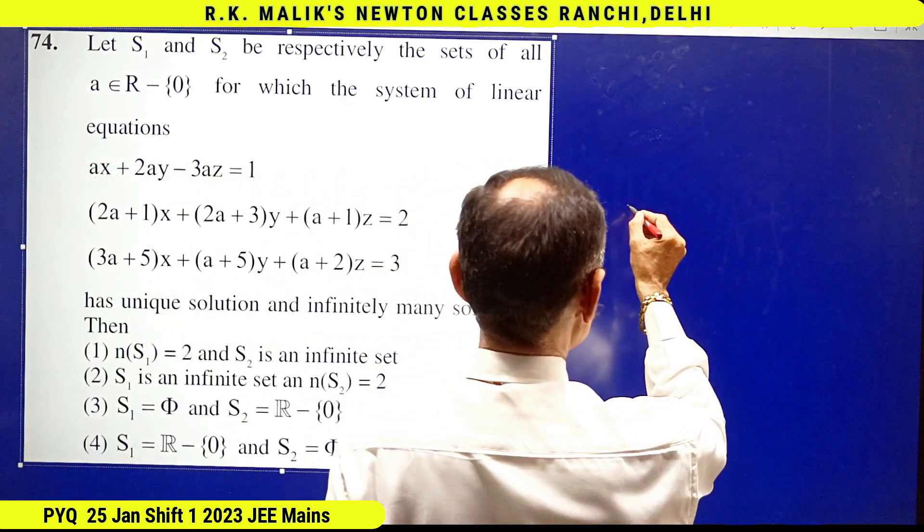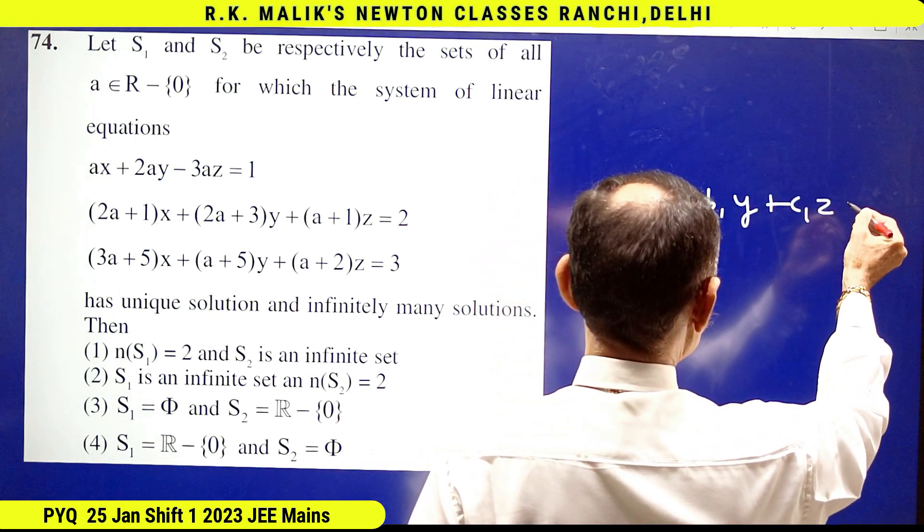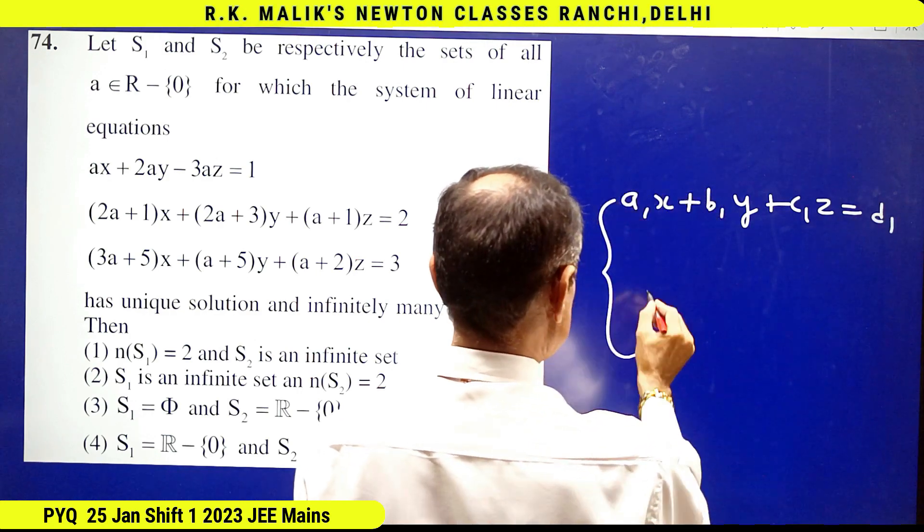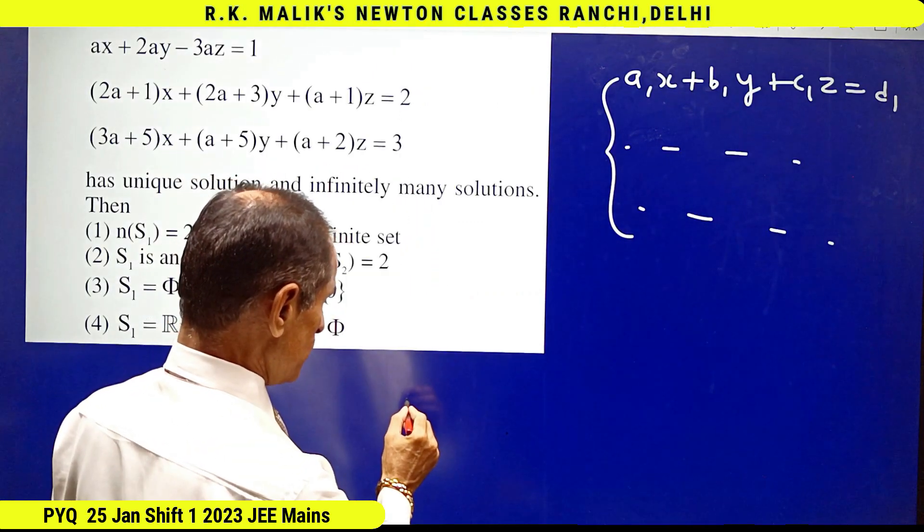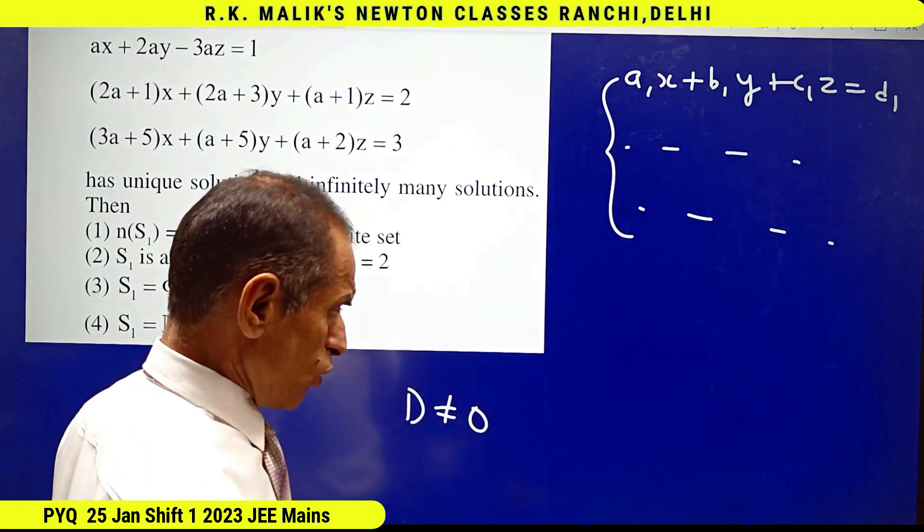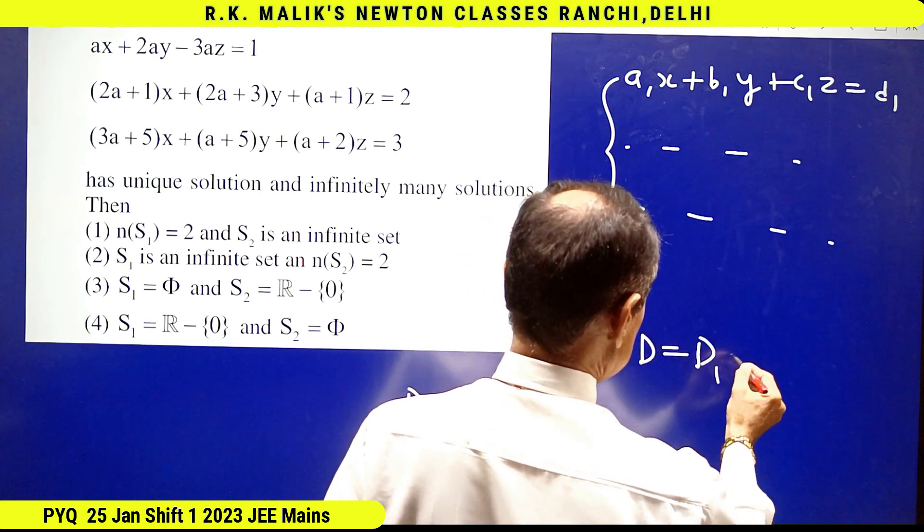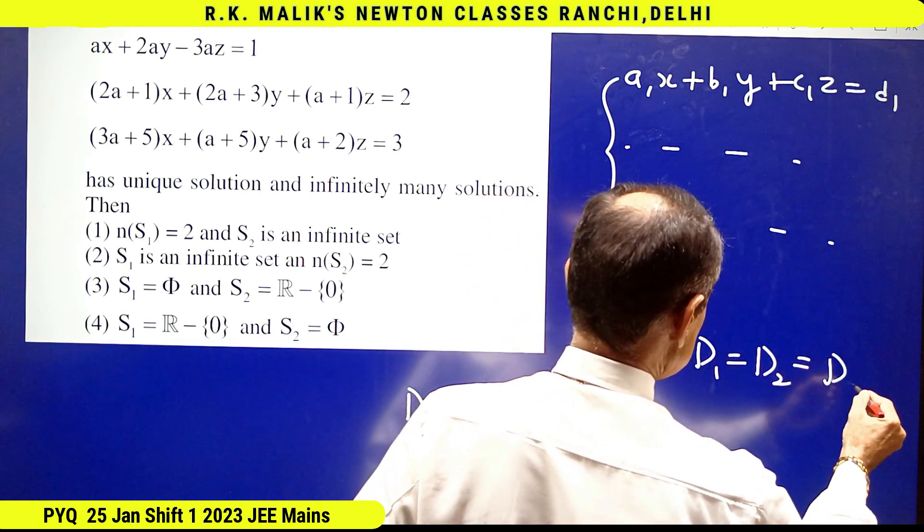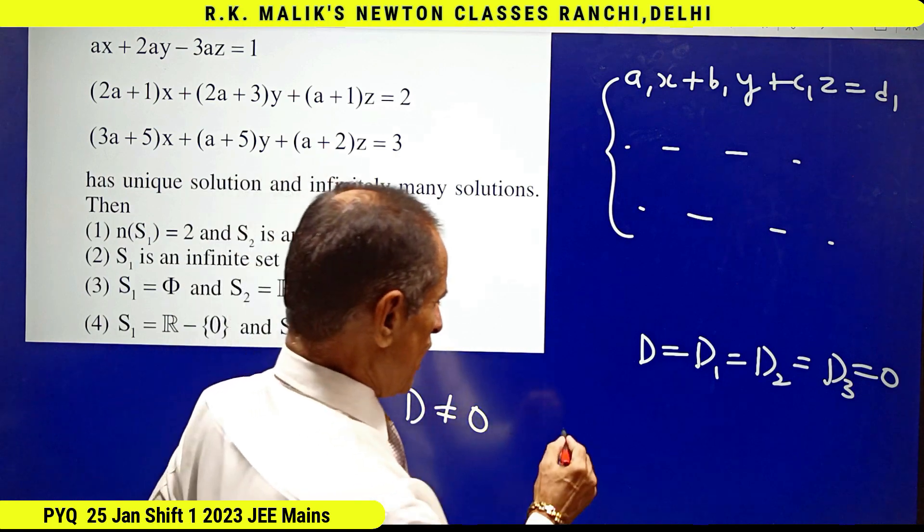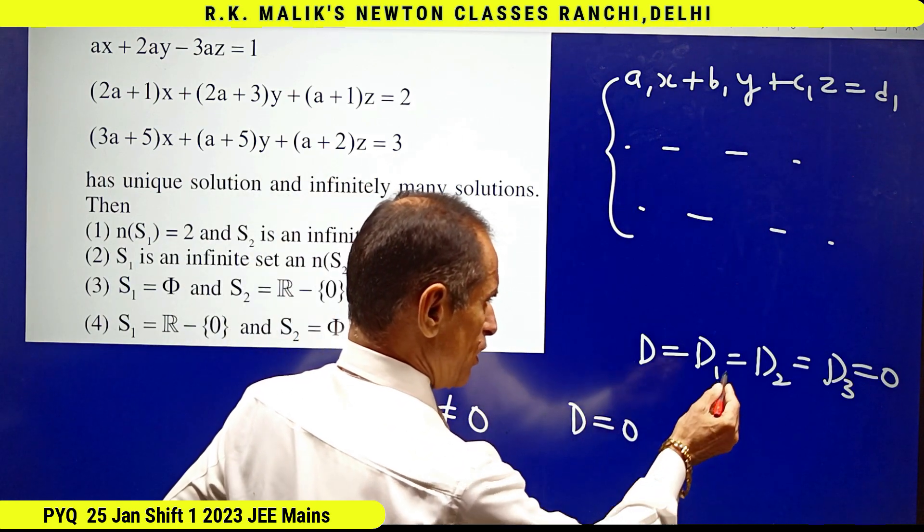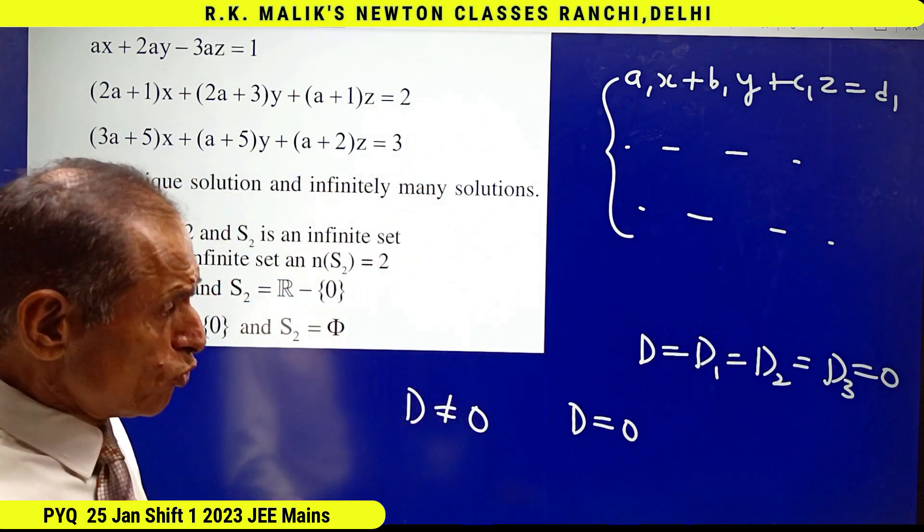Recall that if three equations have unique solution if D is non-zero, and if D equal to D₁ equal to D₂ equal to D₃ equal to 0, then infinitely many solutions are there. After putting D equal 0, if even one of them is non-zero, then the system of equations have no solution.